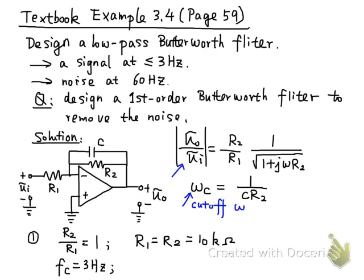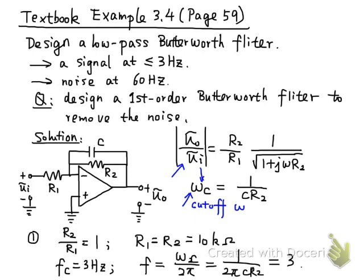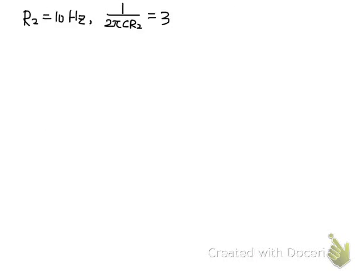Because we know the cutoff frequency equation, we can use ω_c, the angular cutoff frequency, to calculate the time-domain cutoff frequency. So f_c equals ω_c divided by 2π, which equals 1 over 2πCR2. This formula is set equal to 3 Hz, and since we know the value of R2, we can calculate the capacitance C. The calculated value of C is 5.3 microfarads.